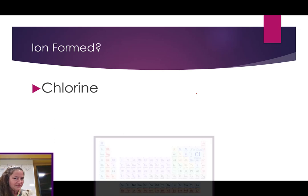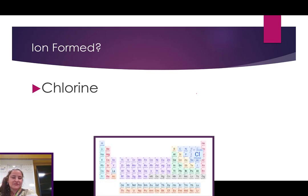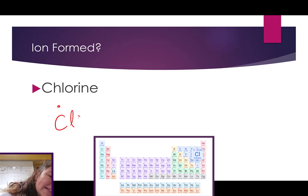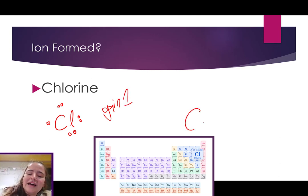What about chlorine? Which group is chlorine in? Chlorine is in group 17. So, it has seven valence electrons. Meaning it needs to gain one and become a Cl- ion.